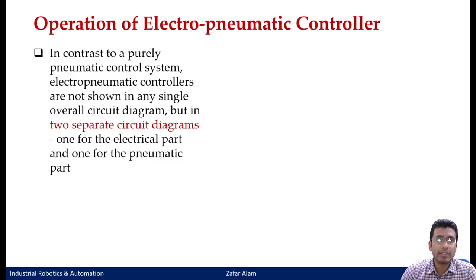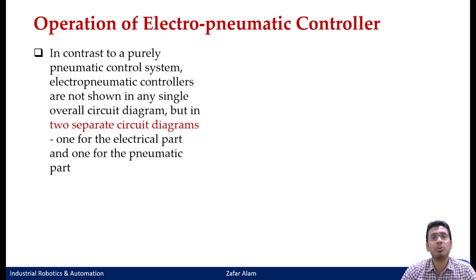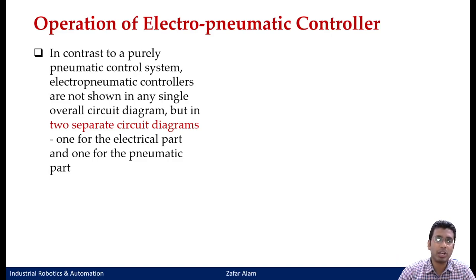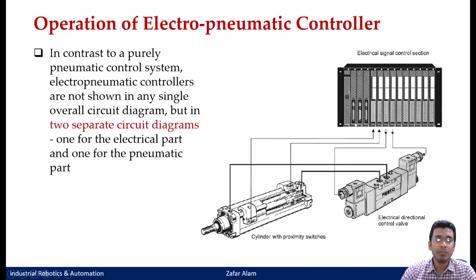When we talk about an electro-pneumatic circuit, we are going to have two separate circuit diagrams as compared to the single circuit diagram in a pneumatic system. In your pneumatic circuit, all your valves were part of a single pneumatic circuit since all control and input elements were pneumatic in nature. Whereas in an electro-pneumatic controller, it will consist of two circuits — one for the electrical part and one for the pneumatic part.